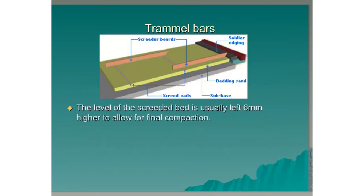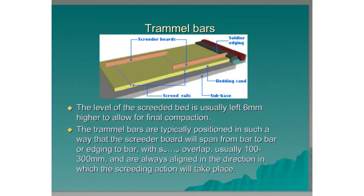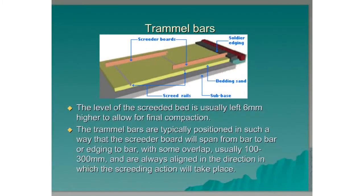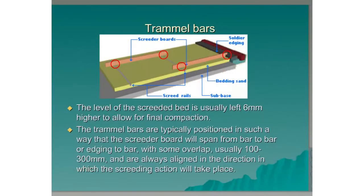The level of the screeded bed is usually left 6mm higher to allow for final compaction. The trammel bars are typically positioned so that the screeder board will span from bar to bar, or edging to bar, with some overlap — usually 100 to 300mm — and are always aligned in the direction in which the screeding action will take place.